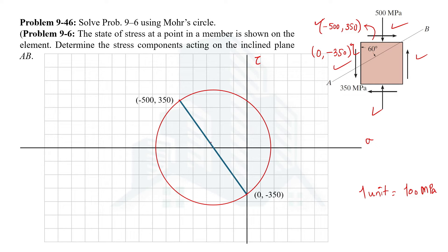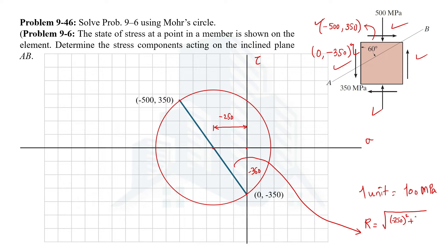We should know some basics of Mohr's circle. The center location is found by taking the average of the normal stresses: the average of minus 500 and zero gives minus 250 MPa. For the radius, using the right-angle triangle with perpendicular 350 and base 250, and applying the Pythagorean theorem, we get a radius of 430.12 MPa.